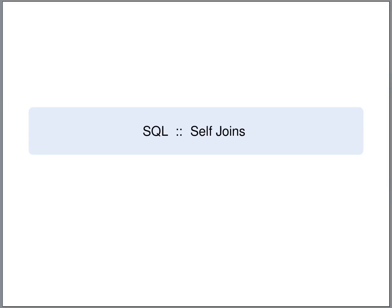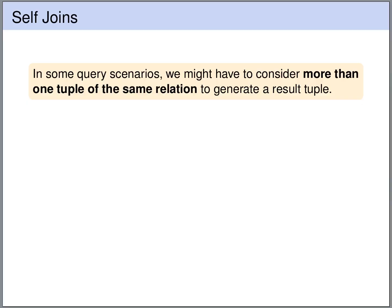In SQL, one speaks of self-joins if the same table is queried more than once — we join a table with itself. In some query scenarios it's necessary to query the same table more than once. With tuple variables, they iterate over the rows in these tables, and a tuple variable always points to one row at a time. So sometimes it's necessary to look at two or more rows of the same table at the same time.